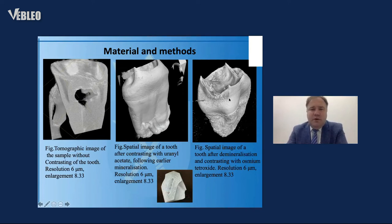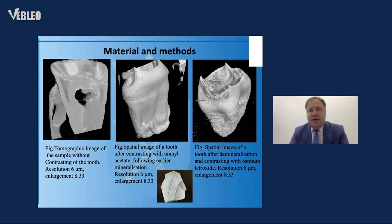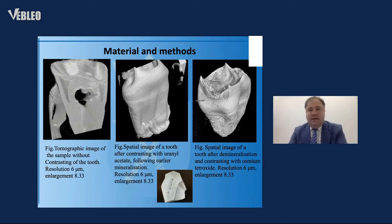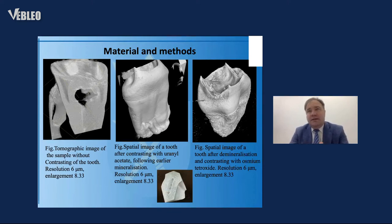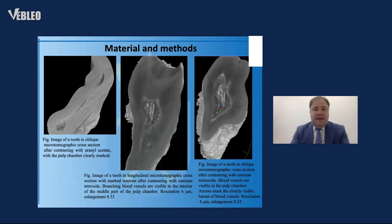We focus on this model because it shows all internal details without destroying the sample, so we can see exactly how the tooth is composed inside. There is no model made from different sections collected and reconstructed by a sequencing process — this is the complete untouched model with all internal parts intact.